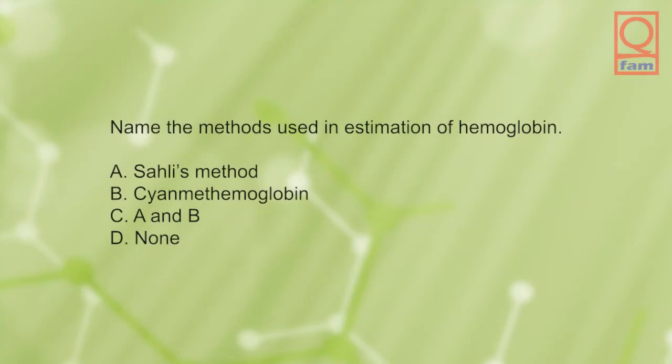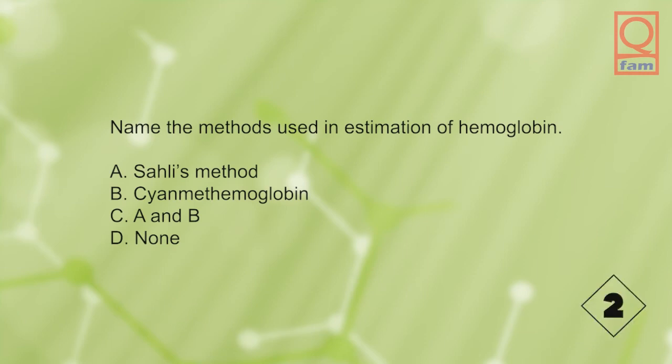Name the methods used in estimation of hemoglobin: A) Sahli's method, B) cyan-methemoglobin, C) A and B, D) none. The answer is C, A and B.